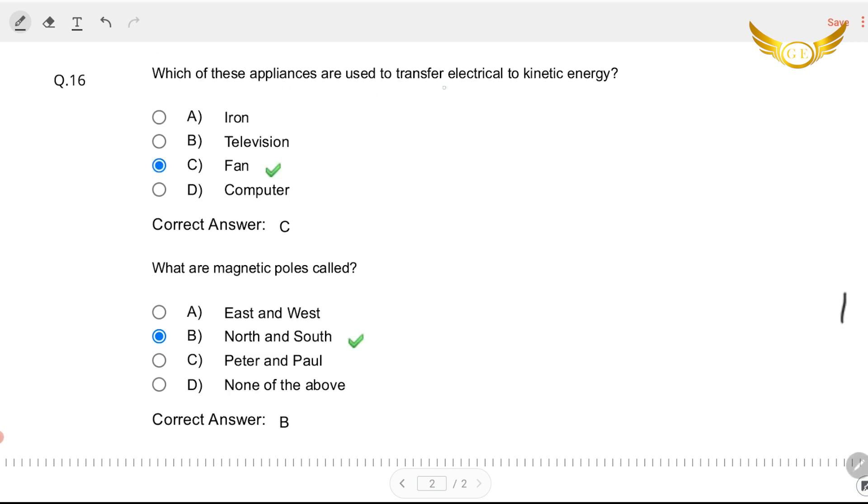Which of these appliances are used to transfer electrical energy to kinetic energy? The answer is fan. You press on the switch of your on the switchboard, it generates current and it puts your fan in motion that is kinetic energy. So fan is the right answer. Again another repeat question. What are magnetic poles called? They are the north and south.